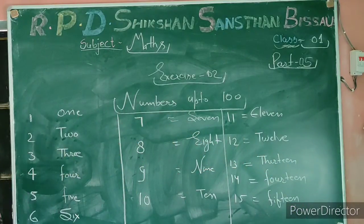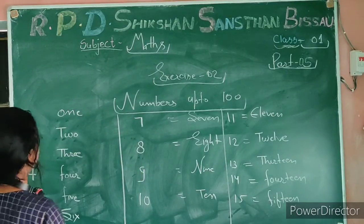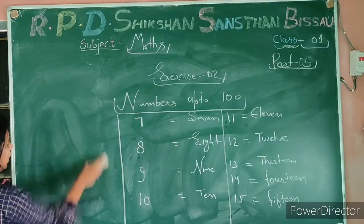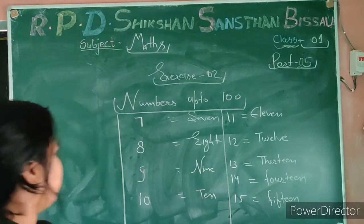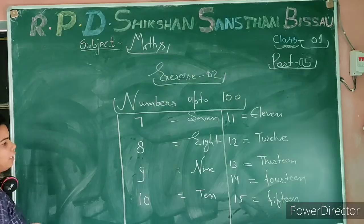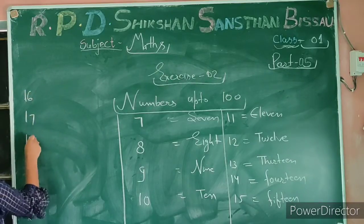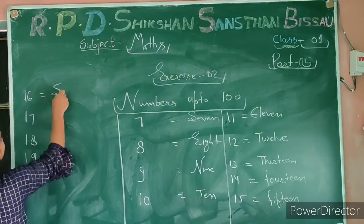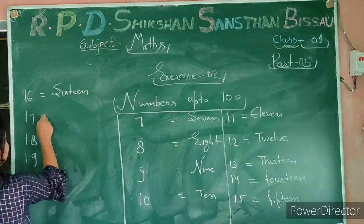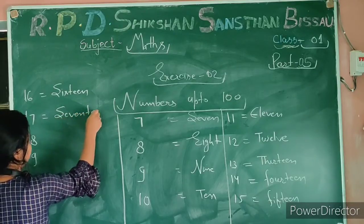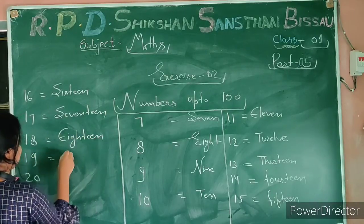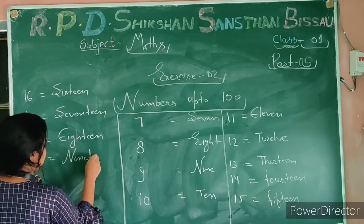Okay students, in today's class I will tell you about counting. I will give you counting 1 to 20 to learn and write in your notebooks. I will tell you 1 to 50, and then 60, 70, 80, 90 and 100.